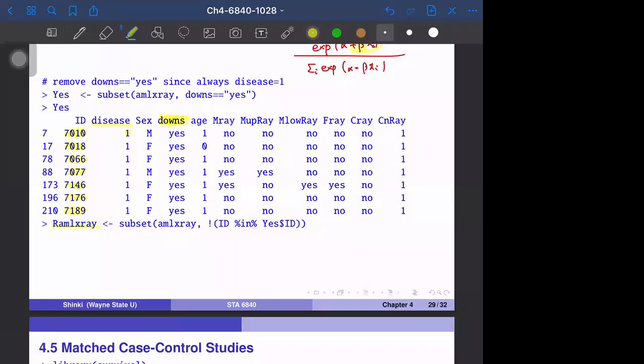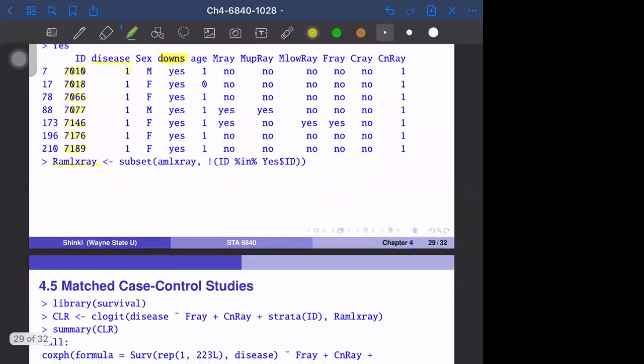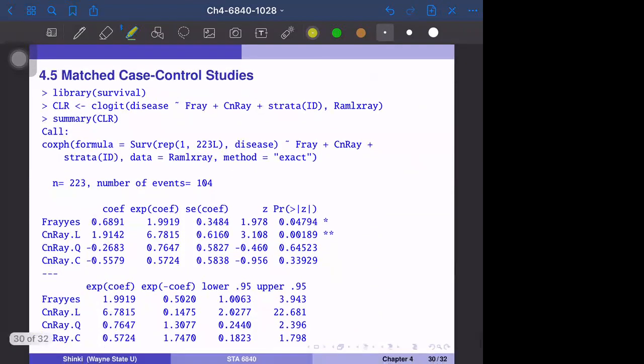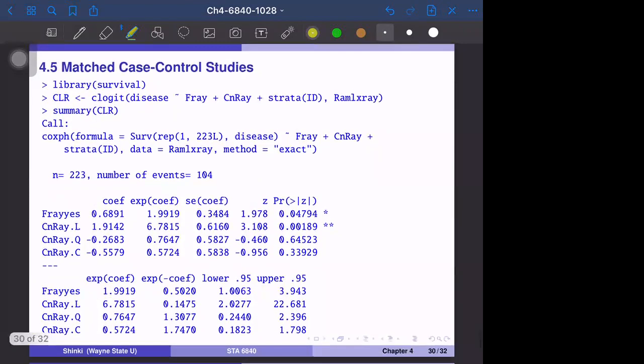The X-ray dataset is the group excluding Down syndrome patients and patients within the same group. We use the library survival because this model is developed in survival analysis. We use the clogit function, the initial of case-control.